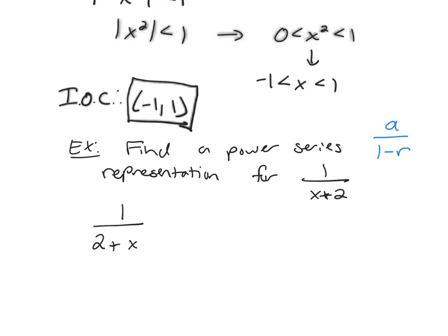I would like for that number in front, 2, to become a 1. How can I turn that into a 1? Factor out a 2. Great. Let's factor out a 2. When you factor out the 2, it's going to factor out of both terms. So 1 plus x over 2.